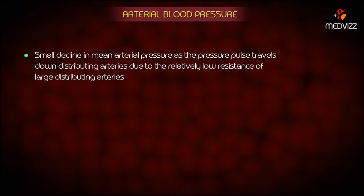There is only a small decline in mean arterial pressure as the pressure pulse travels down distributing arteries, due to the relatively low resistance of large distributing arteries.